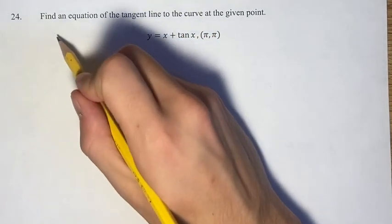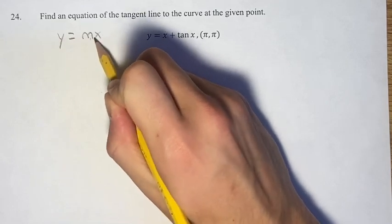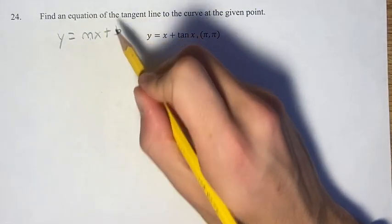So to find the equation of the tangent line, we're going to have y equals mx plus b, and we have to find the m, the slope, and b, the y-intercept.